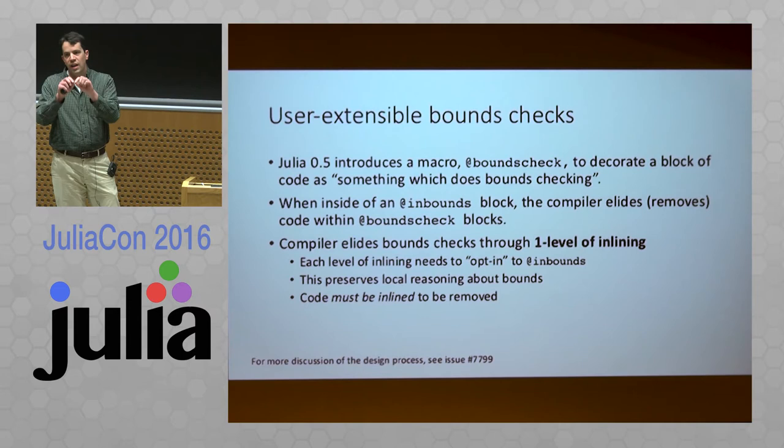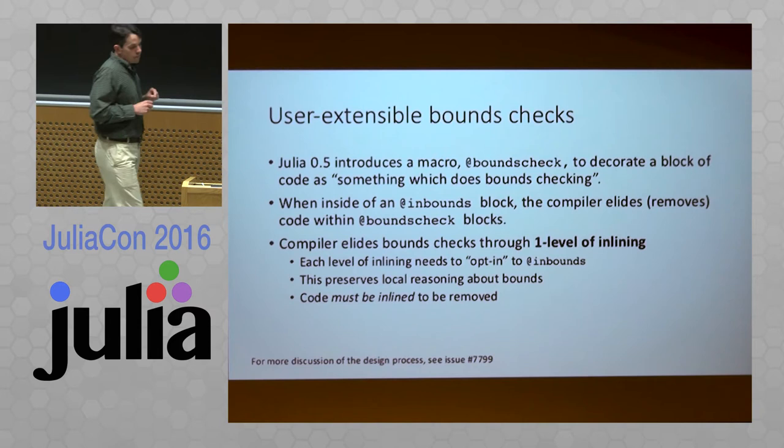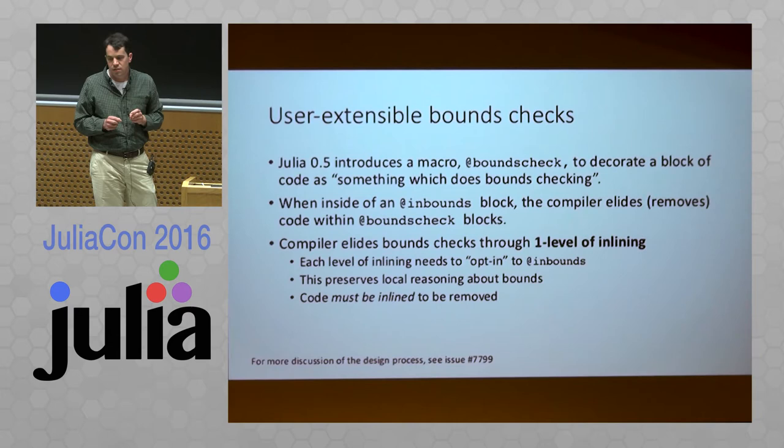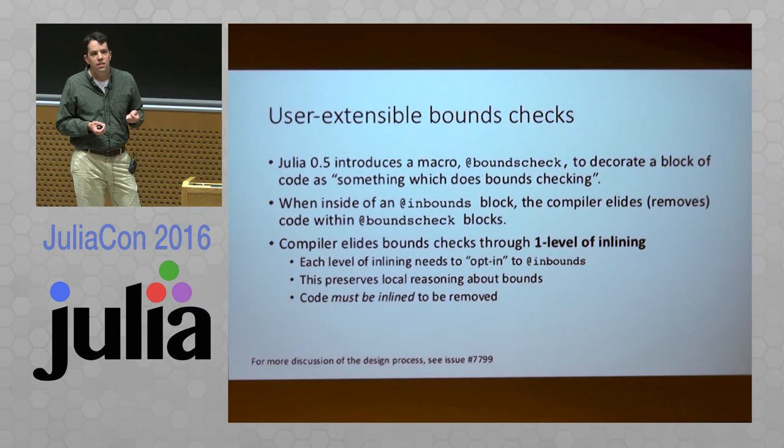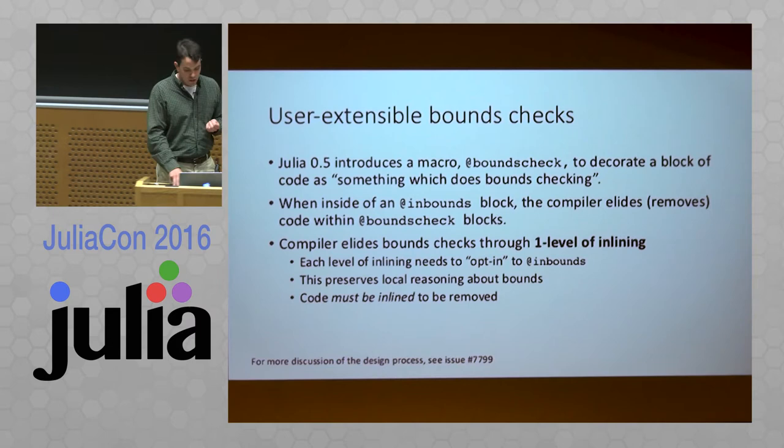So we decided to add an additional rule: we would only elide bounds checks if they were at the same level or one layer deep in the call graph. The implementation requires inlining, which might seem like a limitation, but a function call turns out to be more expensive than a typical bounds check — so there's not a lot of performance to be gained if you're not inlining anyway.